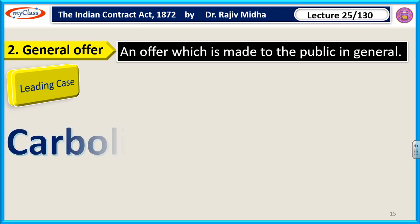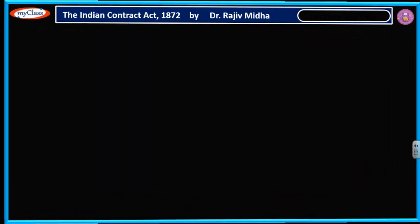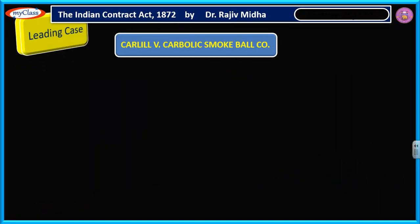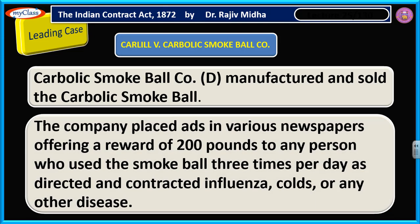In this case, I take up a leading case — that is Carlyle versus Carbolic Smokeball Company. Carbolic Smokeball Company manufactured and sold the Carbolic Smokeball, which is a sort of medicine. The company placed ads in various newspapers, offering a reward of 200 pounds to any person who used the smoke ball three times per day as directed and contracted influenza, colds, or any other disease.